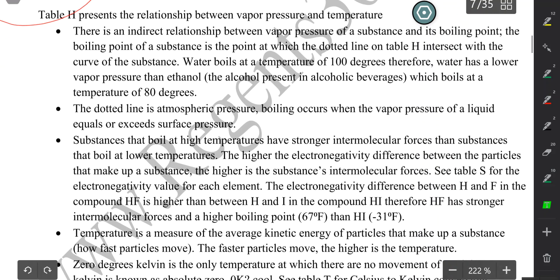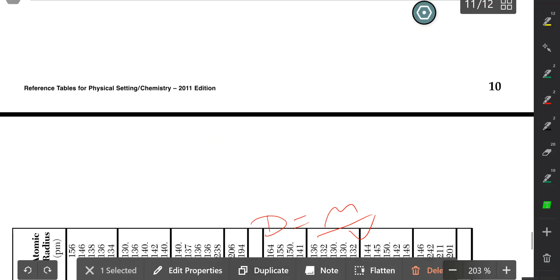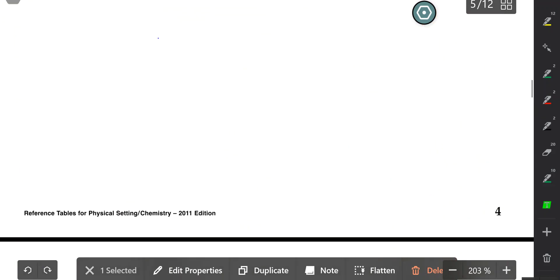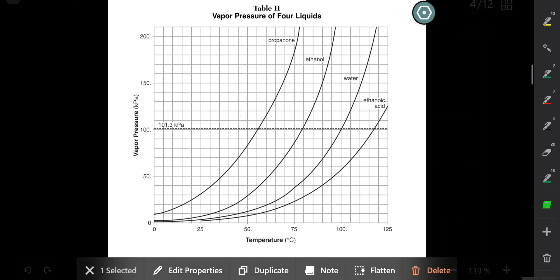Next, table H. So table H presents the relationship between vapor pressure and temperature. Let's read this. Let's take a look at table H to interpret that. Here we are. So this is the dotted line they're talking about. And the boiling point is the point at which the curve intersects with that dotted line. So this dotted line is the standard pressure, 101.3 kilopascals. And the second you exceed that standard pressure, you begin to boil.